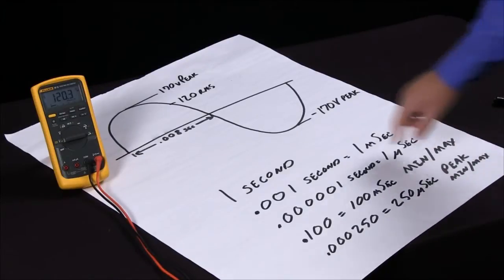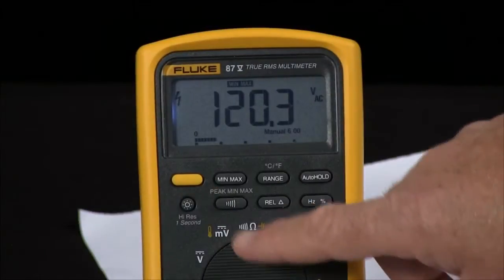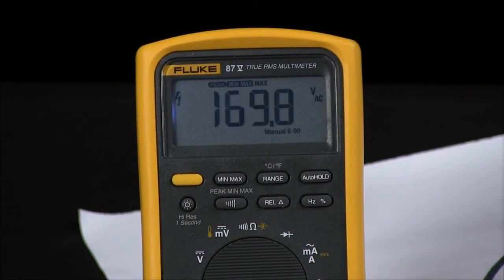So when I'm in peak min max, to activate that I hit the min max key and then the peak min max right after that.